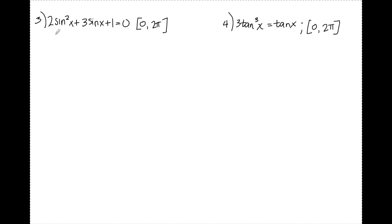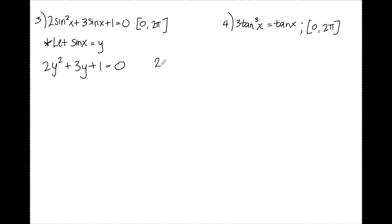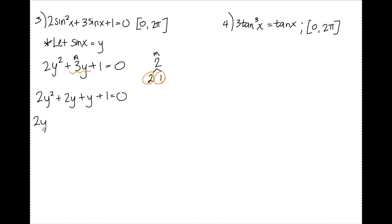Number 3. I'm going to do this the same way as number 2 — I'll let sine x equal y. The equation becomes 2y squared plus 3y plus 1 equals 0. When factoring with a leading coefficient greater than 1, I multiply the leading coefficient and the constant: 2 times 1 is 2. I'm looking for two numbers that add to positive 3 and multiply to positive 2, which is 2 and 1. I split the middle term into 2y plus y and do factor by grouping. The GCF of the first two terms is 2y, leaving y plus 1. The GCF of the second two terms is 1, also leaving y plus 1.